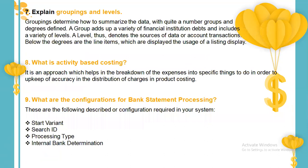Explain groupings and levels. This is basically a parent-child kind of relationship. Groupings determine how to summarize your data with a good number of groups and degrees defined. A group adds up to a variety of financial institution debts and includes a variety of levels. If it denotes a source of data or account transactions, it is part of grouping. Anything below grouping — the degrees — corresponds to line items, displayed using the listing display.